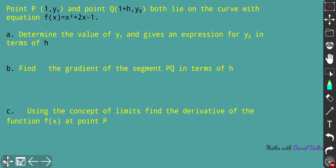Grab your pens, grab your notes, and let's start. We have point P and point Q with the following coordinates, and they both lie on the curve with equation f(x) = x² + 2x - 1. You need to determine the value of y1 and also give an expression for y2 in terms of h.